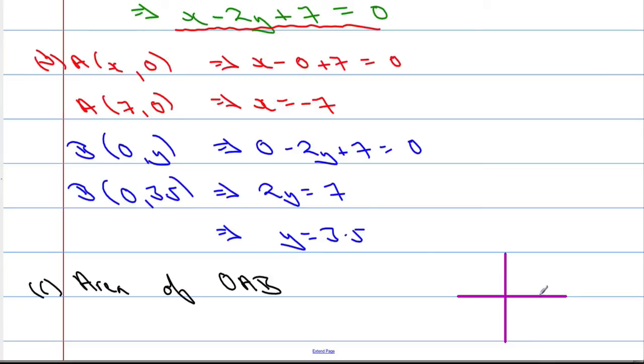We worked out that A crossed at (7, 0). That's the point A, 7, 0. And O is the origin, it's here. And B is (0, 3.5), something like that. We're asked to find the area of the triangle. So it forms a triangle. And you should know that the area of the triangle is the base times the height divided by 2.